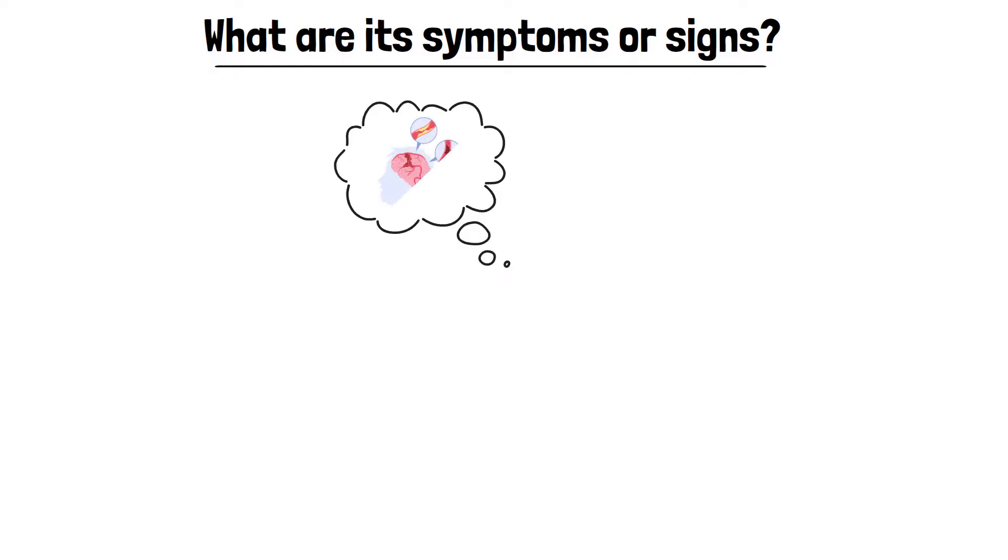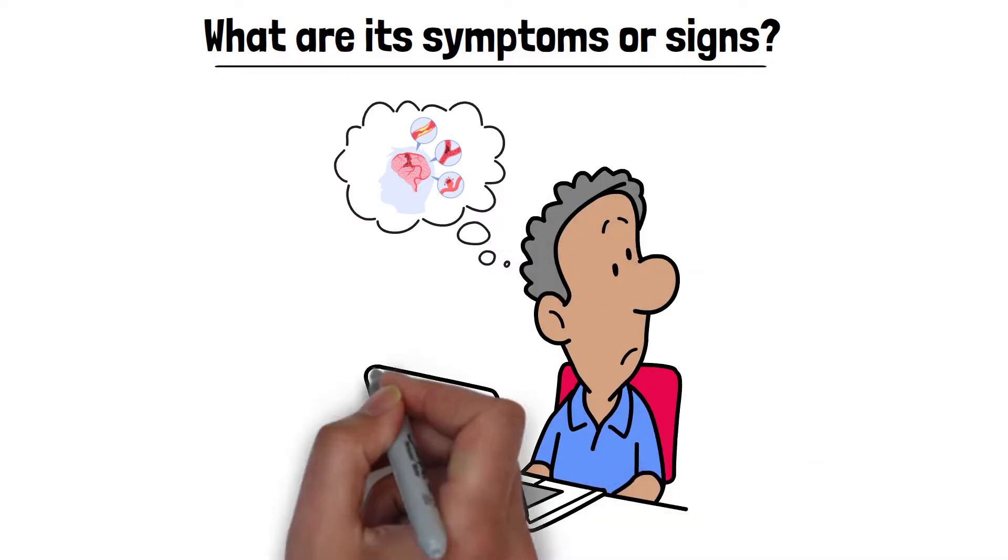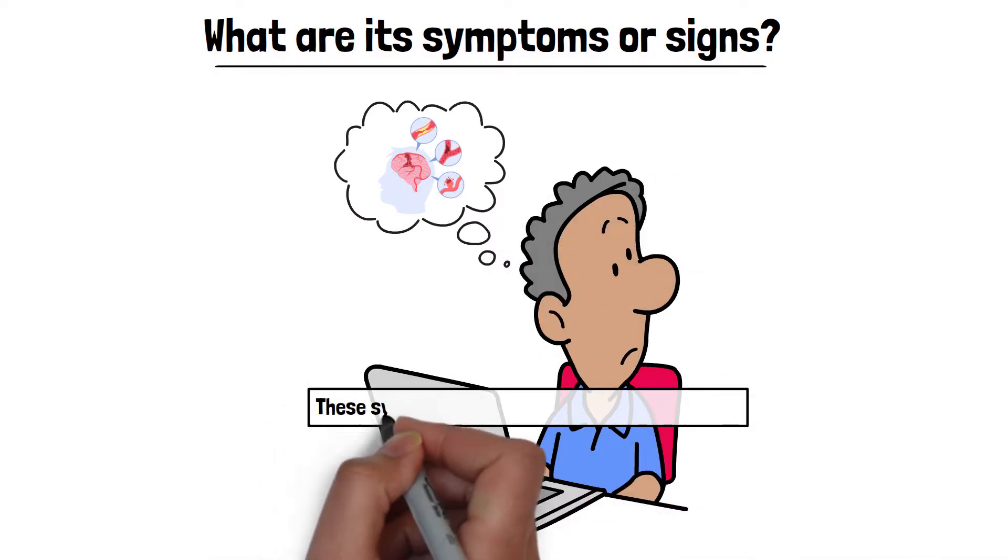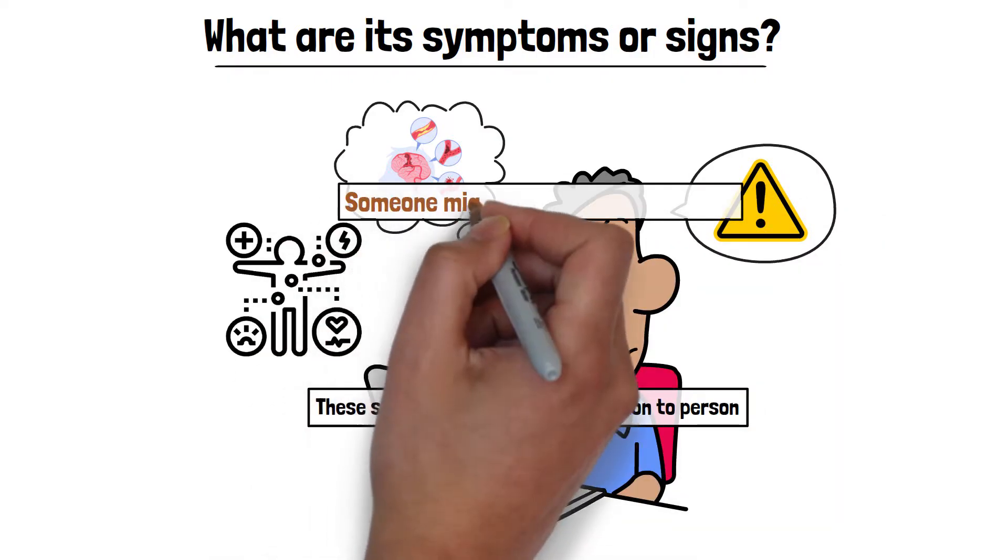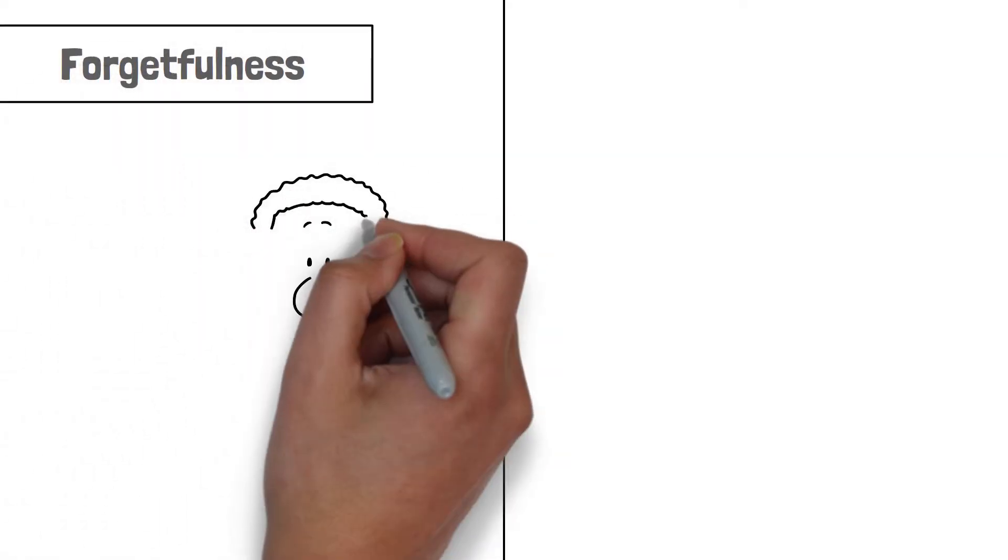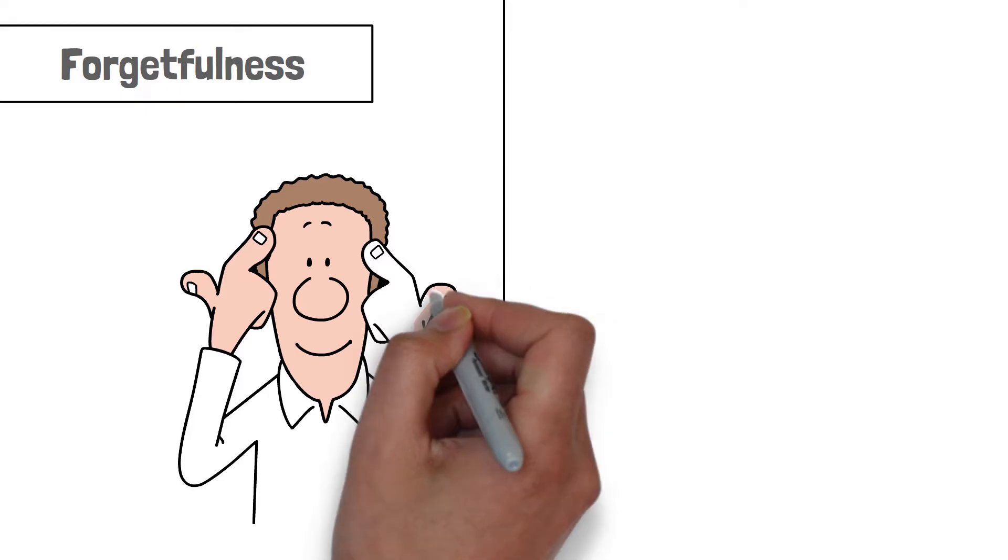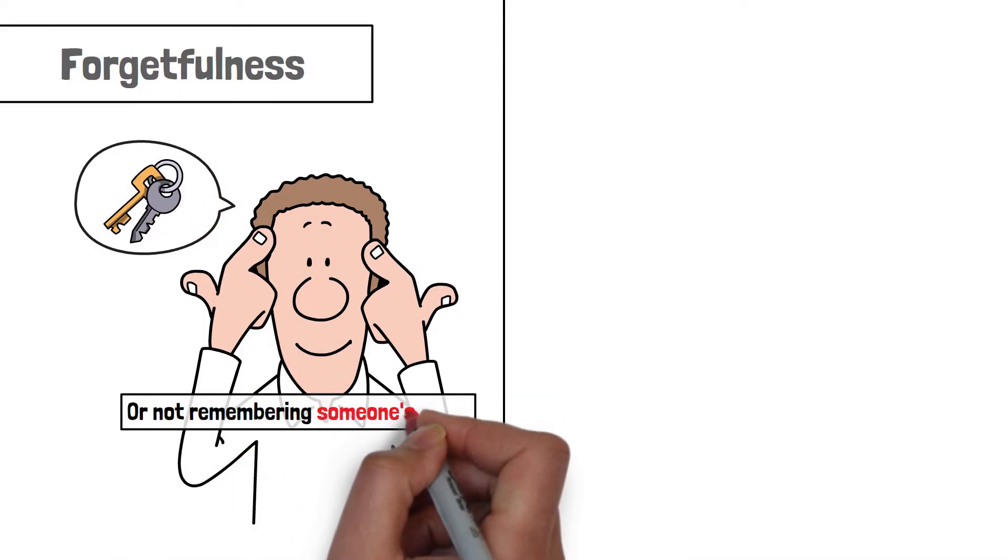So let's see. When someone has neurocognitive disorders or diseases related to cognitive impairment, there are certain symptoms or signs that can indicate that something is wrong. These symptoms can vary from person to person, but there are some common signs that are often observed. Let's learn about these symptoms, which can indicate that someone might be facing this disease. Let's start with forgetfulness. The most common symptom is difficulty in remembering. Forgetting small things like where keys are placed or not remembering someone's name.